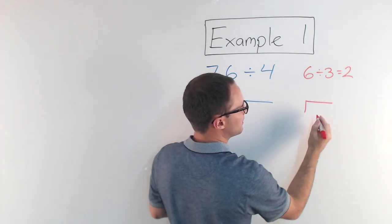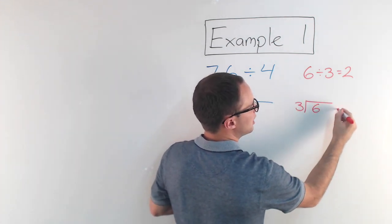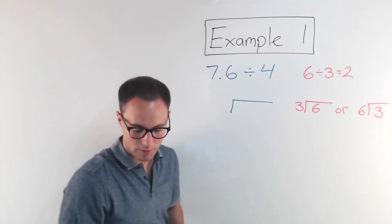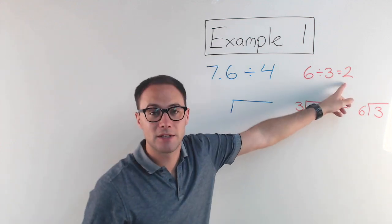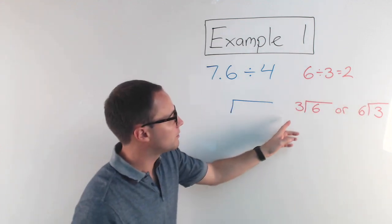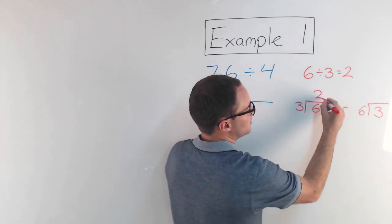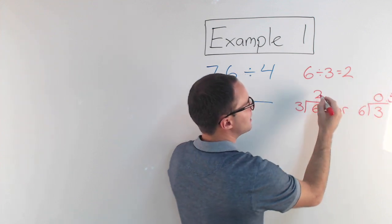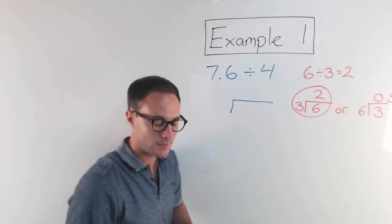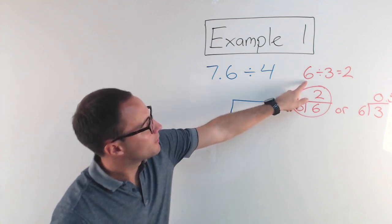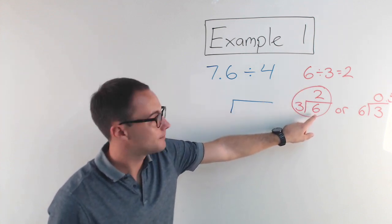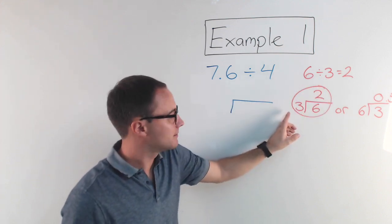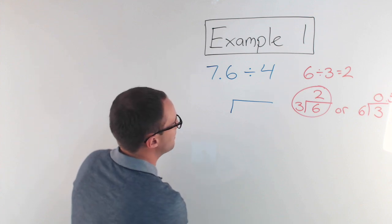So I'm thinking: is it going to be the 6 here and the 3 here, or the 6 here and the 3 here? You know the answer has to be 2, so whichever one gives you 2 is the way it needs to be. Well, 3 goes into 6 two times. 6 goes into 3 zero, and then you would add a 0.5. So it's got to be that — which means the first number goes on the inside, and the next number goes on the outside. That's what you're dividing by. That can help you remember if you ever forget.